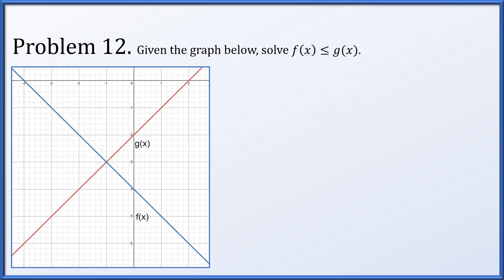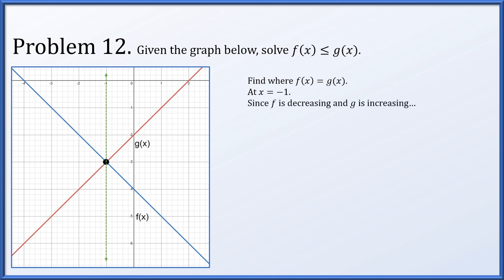Problem twelve is very similar: f decreasing, g increasing, solve where f of x is less than or equal to g of x. We find the intersection at x equals negative 1. Since we now include the equality, the solution is x greater than or equal to negative 1 — meaning f of x is less than or equal to g of x for all x at or to the right of negative 1.